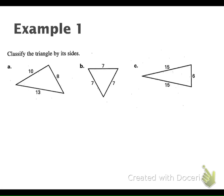First one up — if you are classifying it by sides, do we have any congruent sides in our first picture? No. So which one had no congruent sides? Scalene.